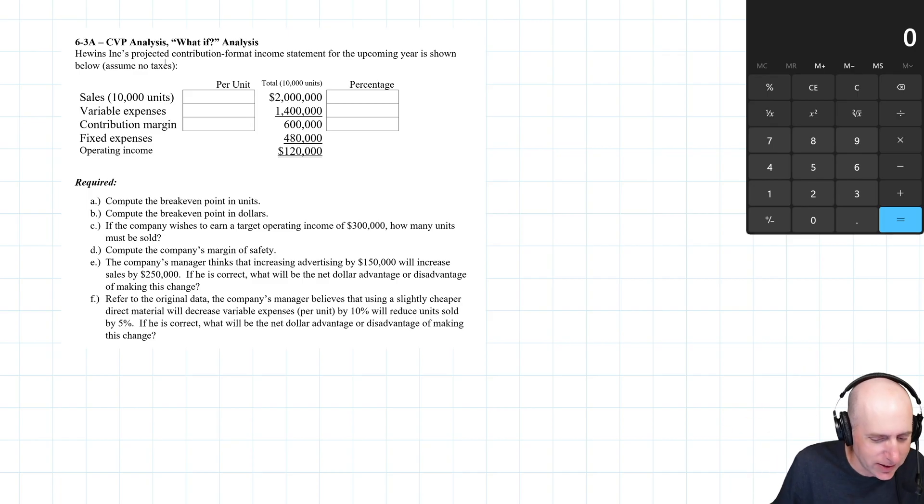Hewins Inc's projected contribution format income statement for the upcoming year is shown below. We can see the income statement there. I always like to do per unit as well as percentages. So $2 million and we're selling 10,000 units, $2 million divided by 10,000 units means our price is $200 a unit.